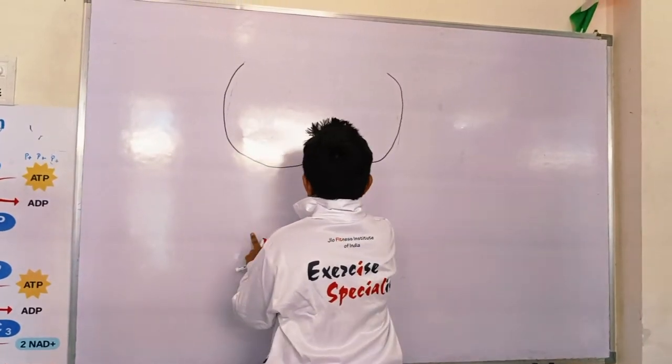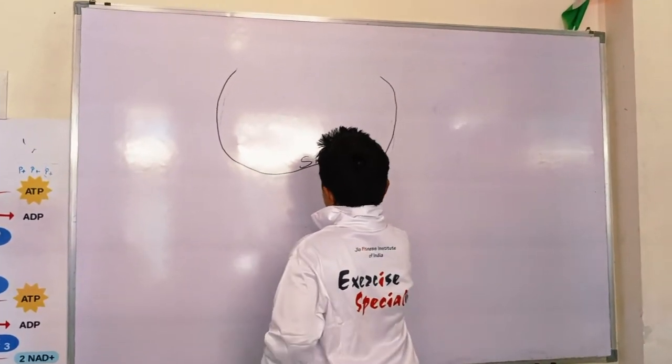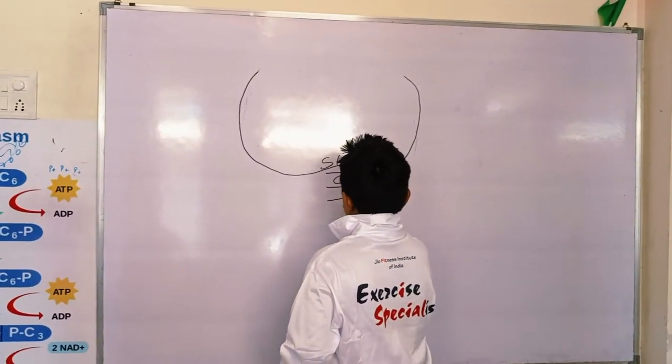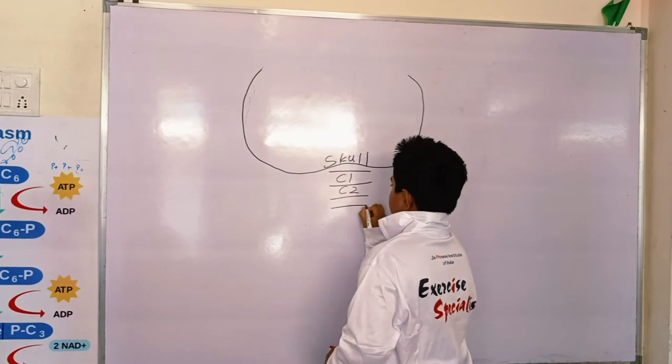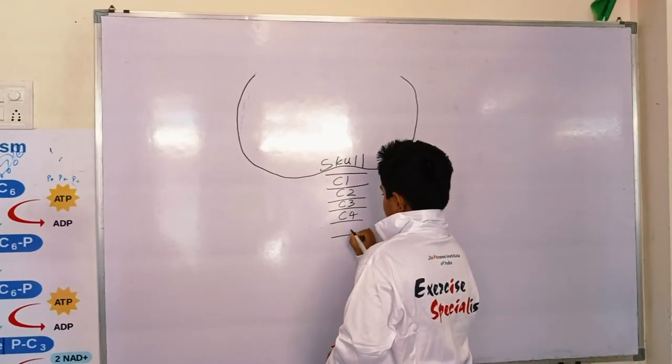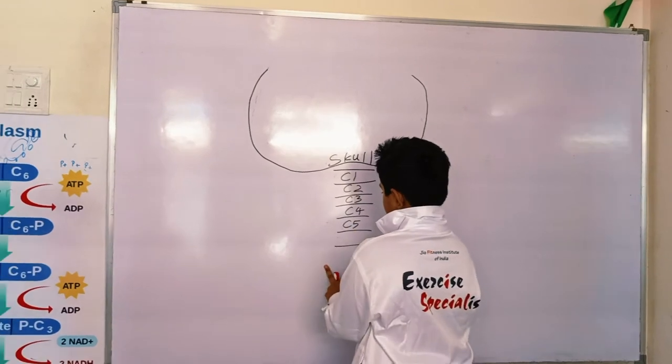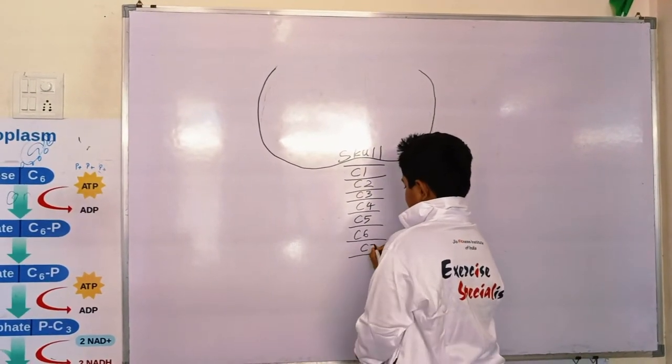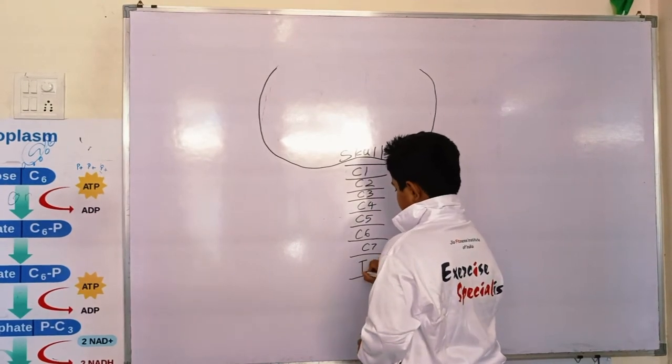This is the cervical spine. This is C1, C2, C3, C4, C5, C6, C7, and C8.